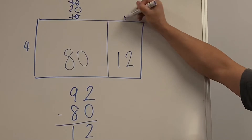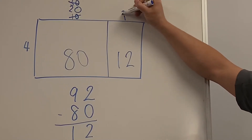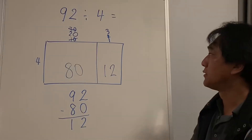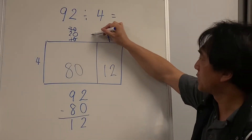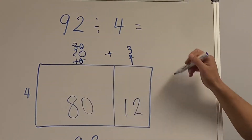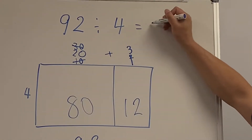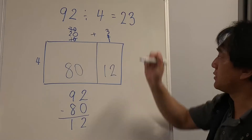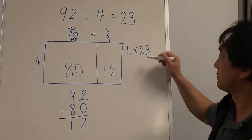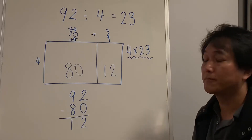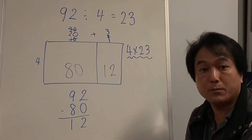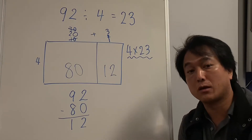1×4=4, 2×4=8, 3×4=12 — so the answer is 20 and 3. Therefore 4 times 23 equals 92. Let's see if you can do it by yourself — I'm going to give you another question.